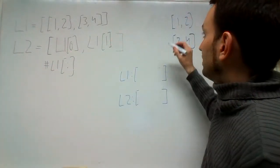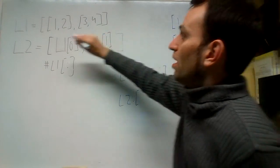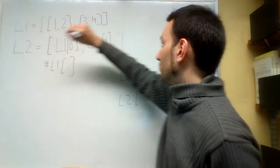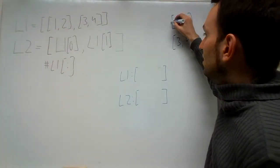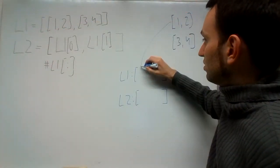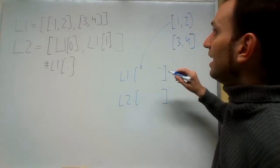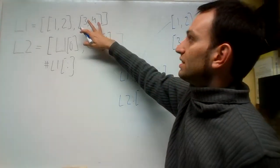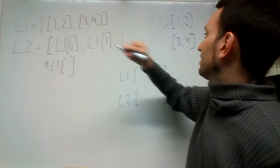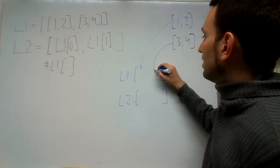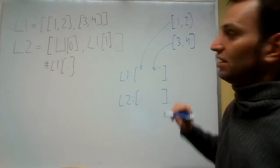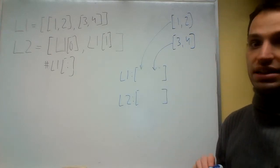The way we do it is: L1's first element is this guy, so that's going to point like that. And L1's second element is this guy, so that's going to point like that.